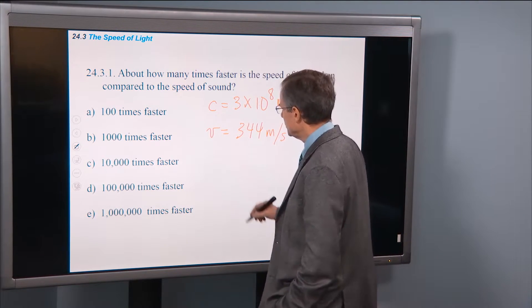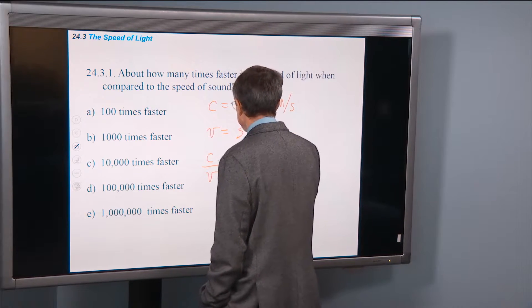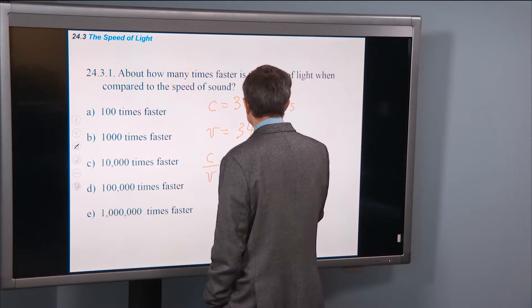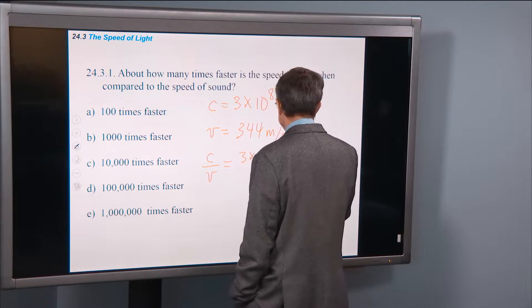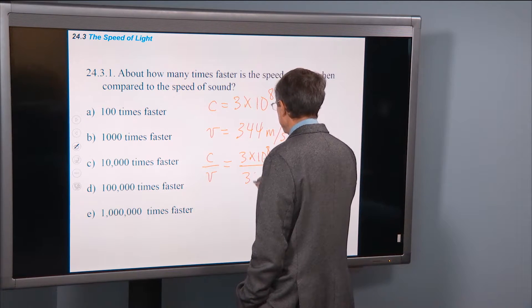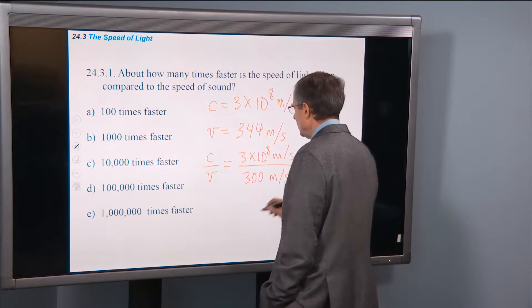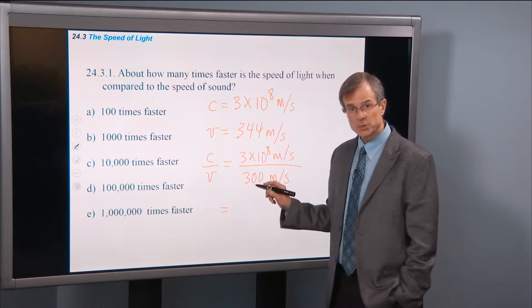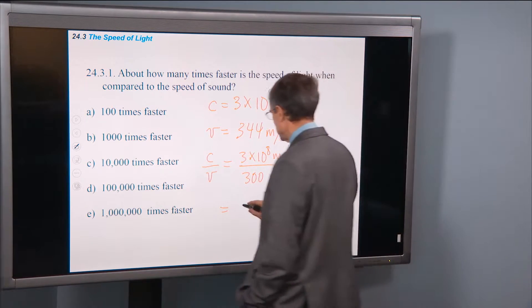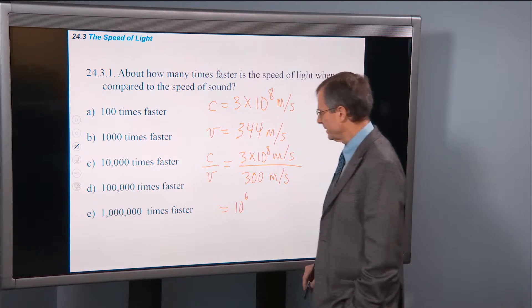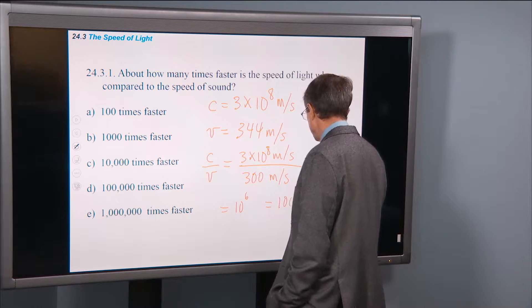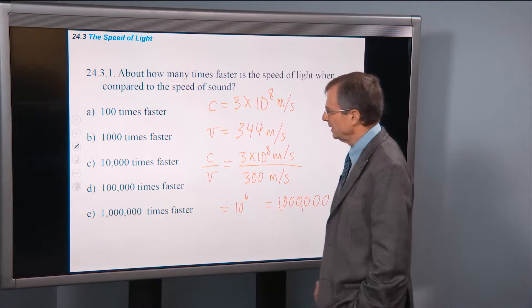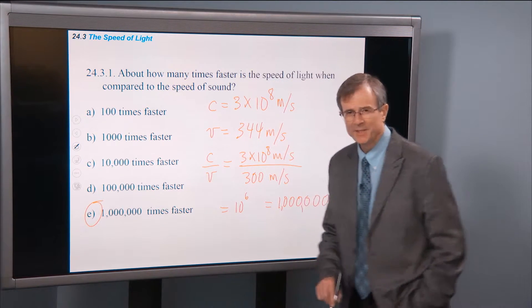Well, what's the ratio of those two? C over V. Let's just call this 300 meters per second to make the numbers a little bit easier. 3 times 10 to the 8 meters per second divided by, let's just say, 300 meters per second. Well, the 3's cancel. We get 10 to the 8 divided by 10 to the 2. 100 is 10 to the 2. So that's 10 to the 6. The ratio is about 10 to the 6. So that's 10 to the 6 is a million. And so about a million times faster.